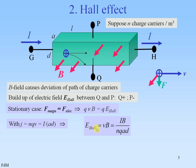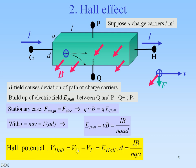Then we get for the Hall field V times B — this expression here proportional to I and B. And thus the Hall potential, the potential difference between Q and P, is E Hall times D, given by I times B over NQA. This means that we have created a magnetometer because the Hall potential, Vp minus Vq, is proportional to the external field.